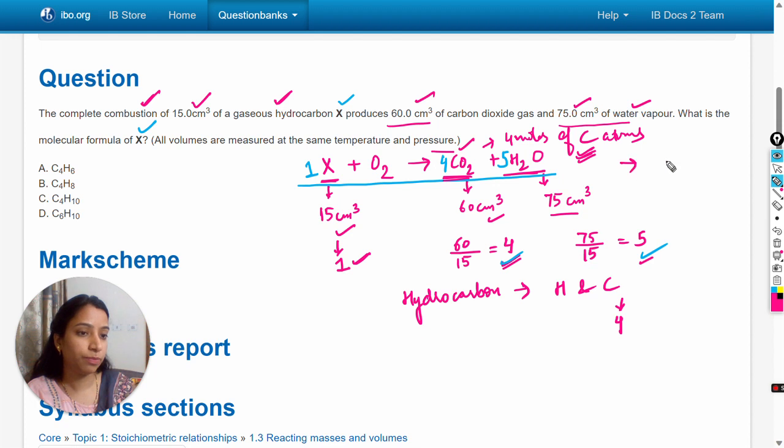And 5 moles of water molecules, so number of hydrogen atoms will be 5 into 2, then it will be 10. 10 atoms of hydrogen and 4 atoms of carbon in this hydrocarbon: C₄H₁₀.